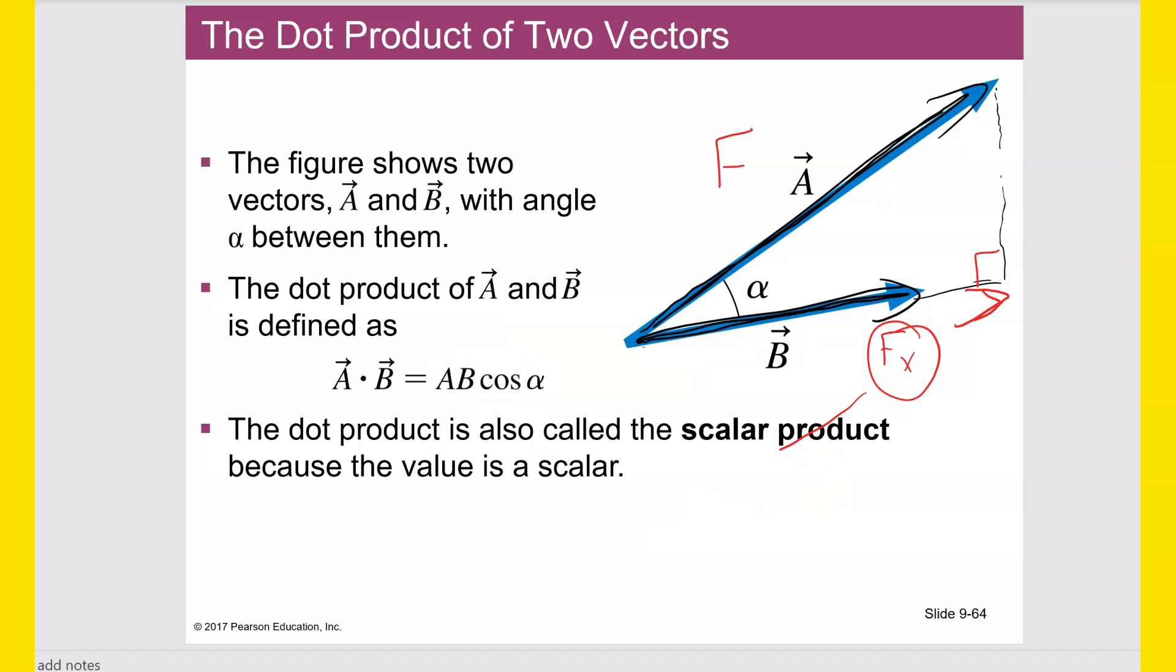So that's where we get this right here, AB cosine alpha. There is one more way to do what they're calling a dot product here. So let's say you have the force already broken down into its horizontal and vertical components.